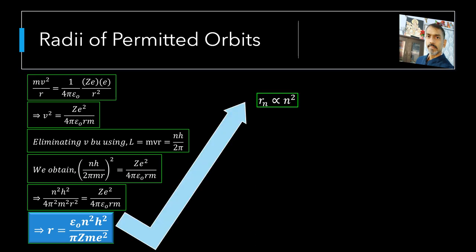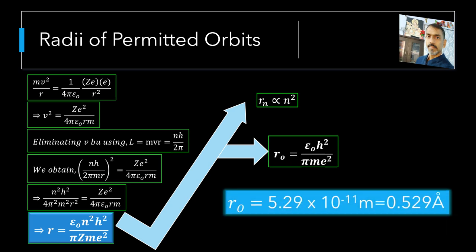Clearly, radius of nth orbit is directly proportional to n square. The radius of first orbit of electron of hydrogen atom is called the Bohr's radius. On putting z equal to 1 and n equal to 1, we get Bohr's radius equal to epsilon naught h square by π m e square. Putting values of constants, we get Bohr's radius equal to 5.29 into 10 raised to the power minus 11 meter, that is approximately 0.529 angstrom.